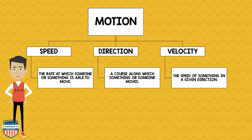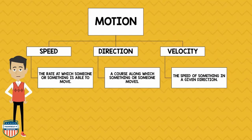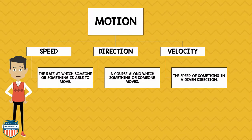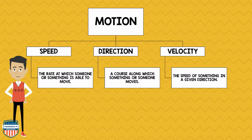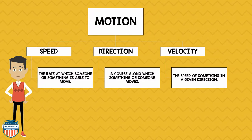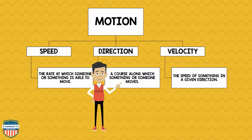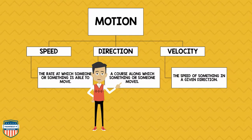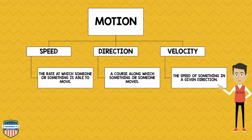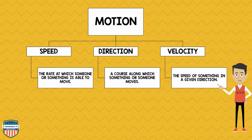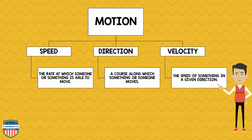We've got to slow down — too many vocabulary words at one time. Speed is the rate at which someone or something is able to move. Direction is a course along which something or someone moves. Velocity is the speed of something in a given direction.